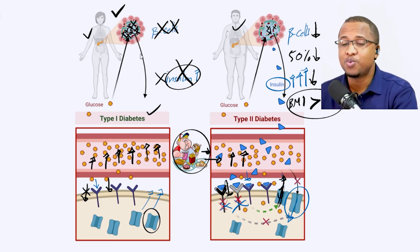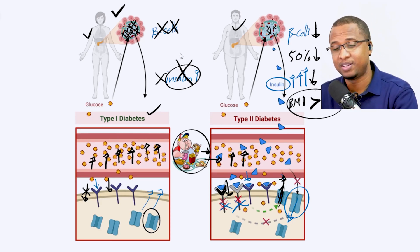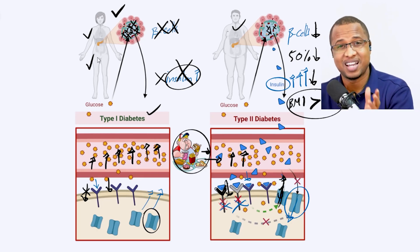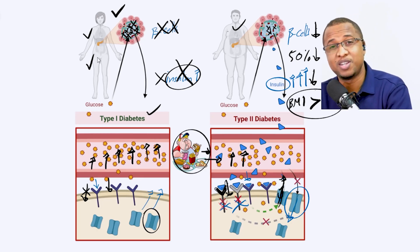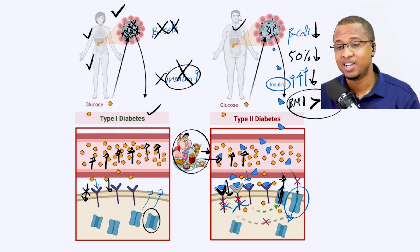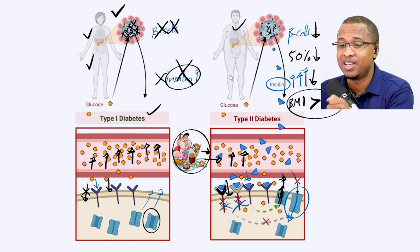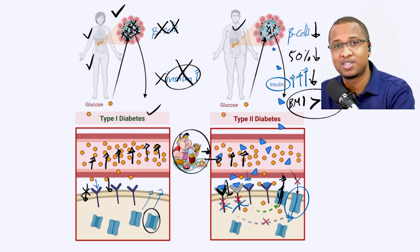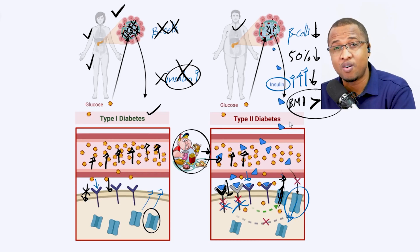Which one do you think is more likely to happen early in life? Type 1 diabetes. Because your immune system is making mistakes, and when you're young your immune system is still learning, so they're more likely to make mistakes. For type 2 diabetes, it's a lifestyle disease, so you first have to live a lifestyle that leads to that point — and then you will have type 2 diabetes. So it takes a long time.